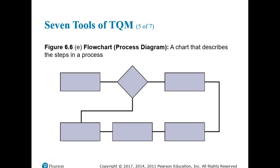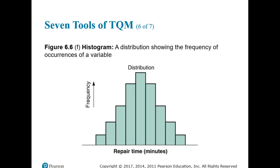Flowcharts graphically present a process or system using annotated boxes and interconnected lines — a simple but great tool for making sense of or explaining a process. Histograms show the range of values of a measurement and the frequency with which each value occurs. They show the most frequently occurring readings as well as variations. Statistics such as the average and standard deviation may be calculated, but data should always be plotted so the shape of the distribution can be seen, providing insight into the cause of variation.